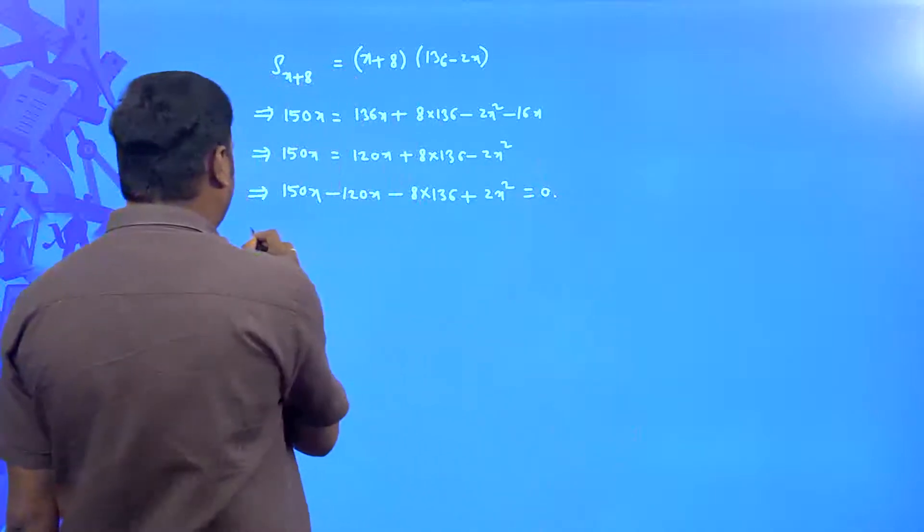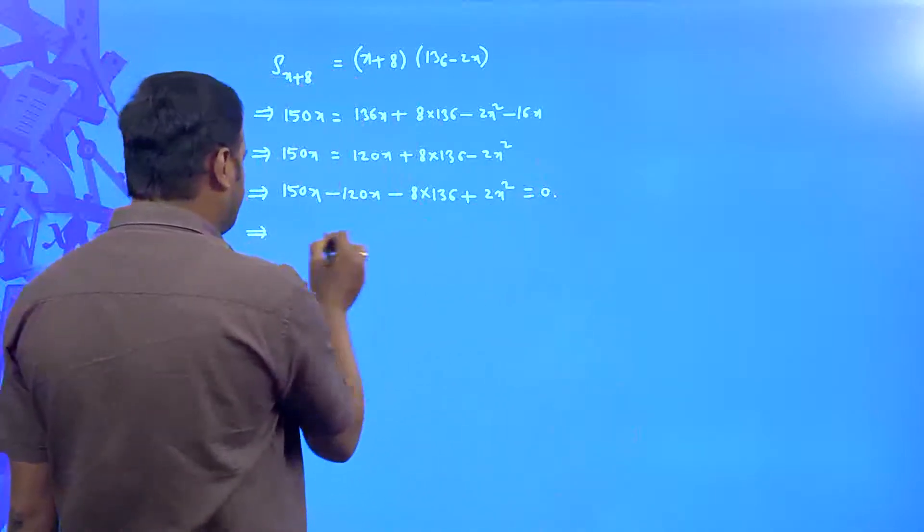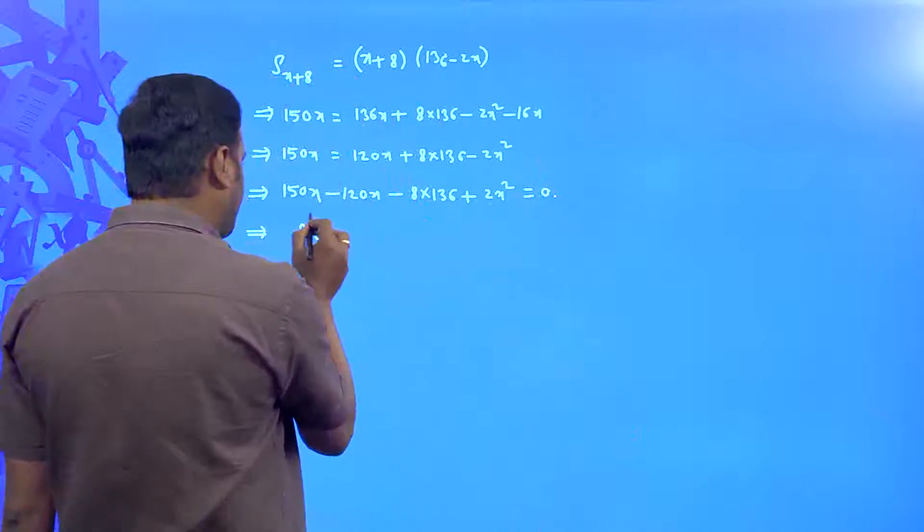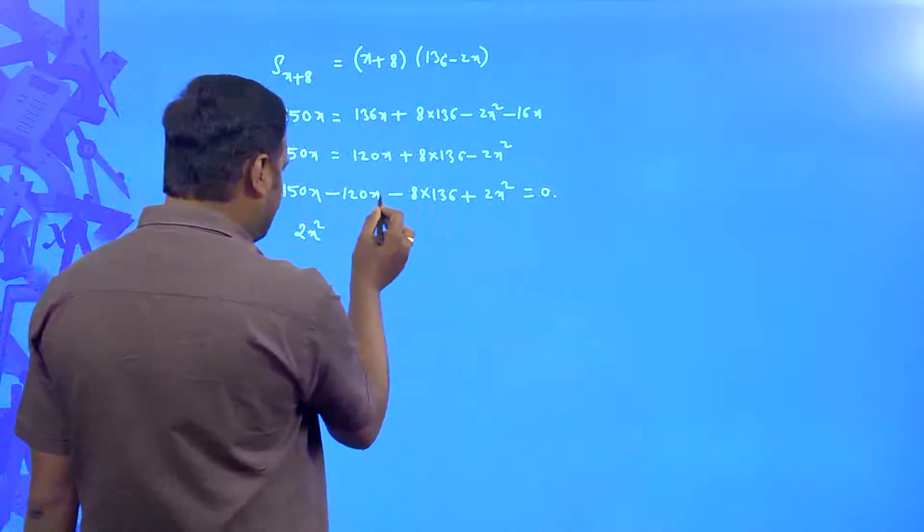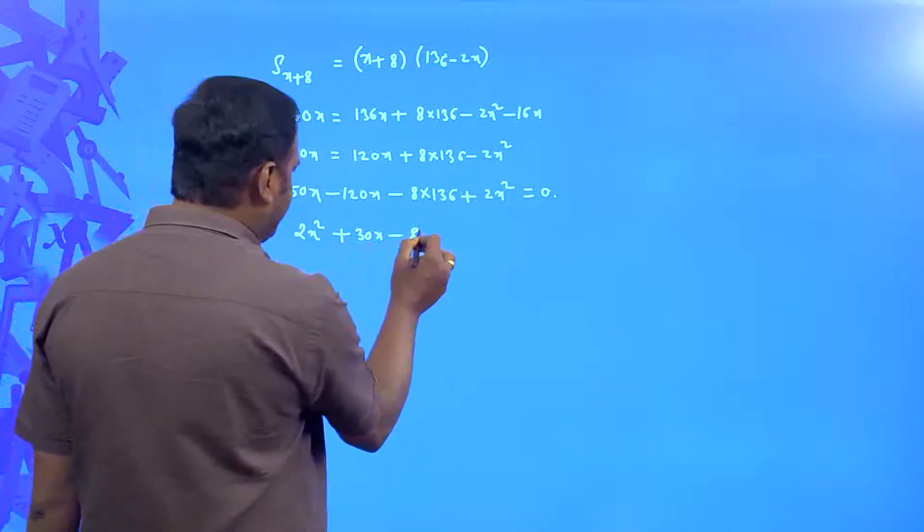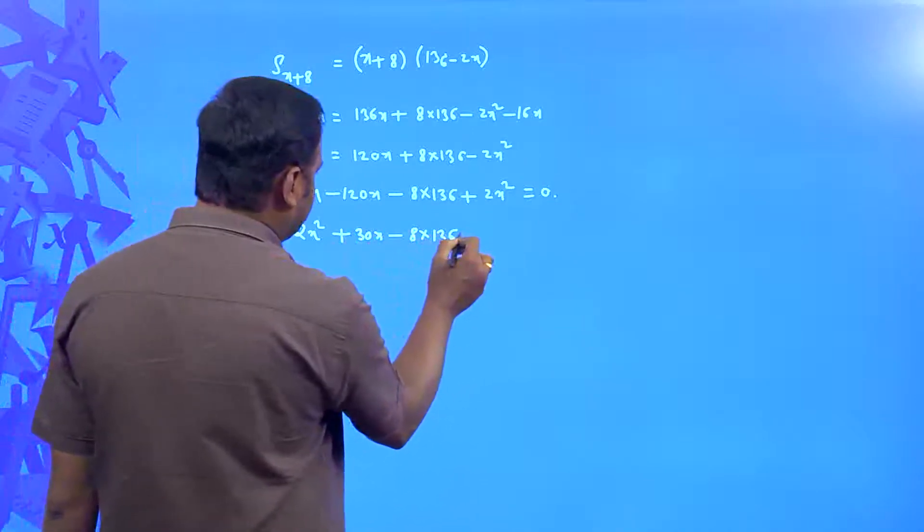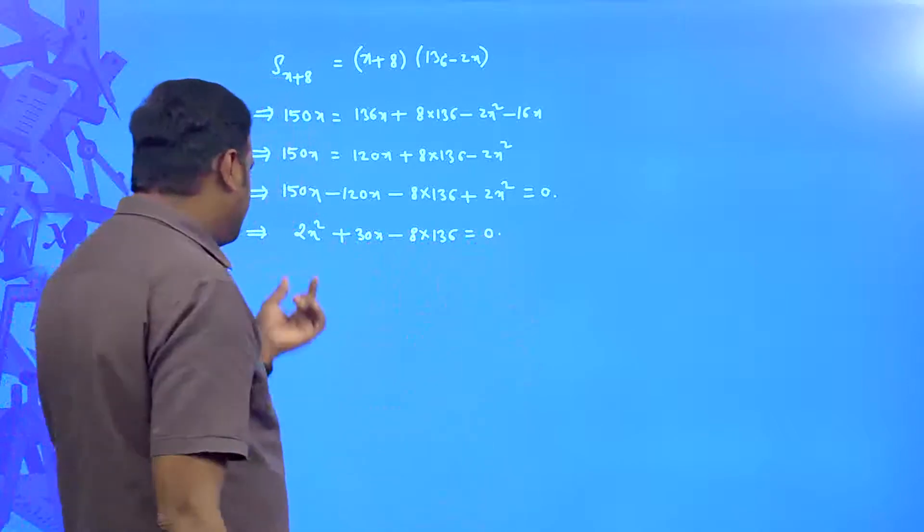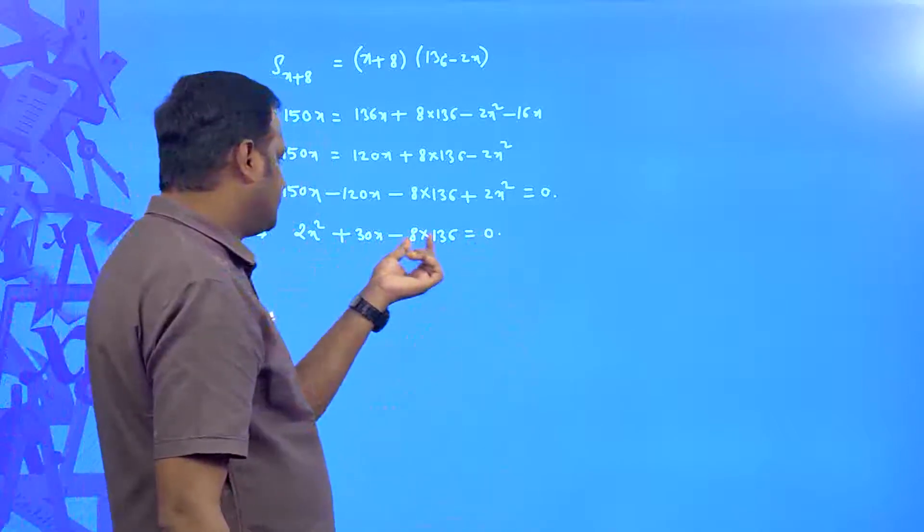If you write it in order then it would be first 2x square plus 150x minus 120x is going to be plus 30x minus 8 into 136 is equal to 0. See this is a multiple of 2.